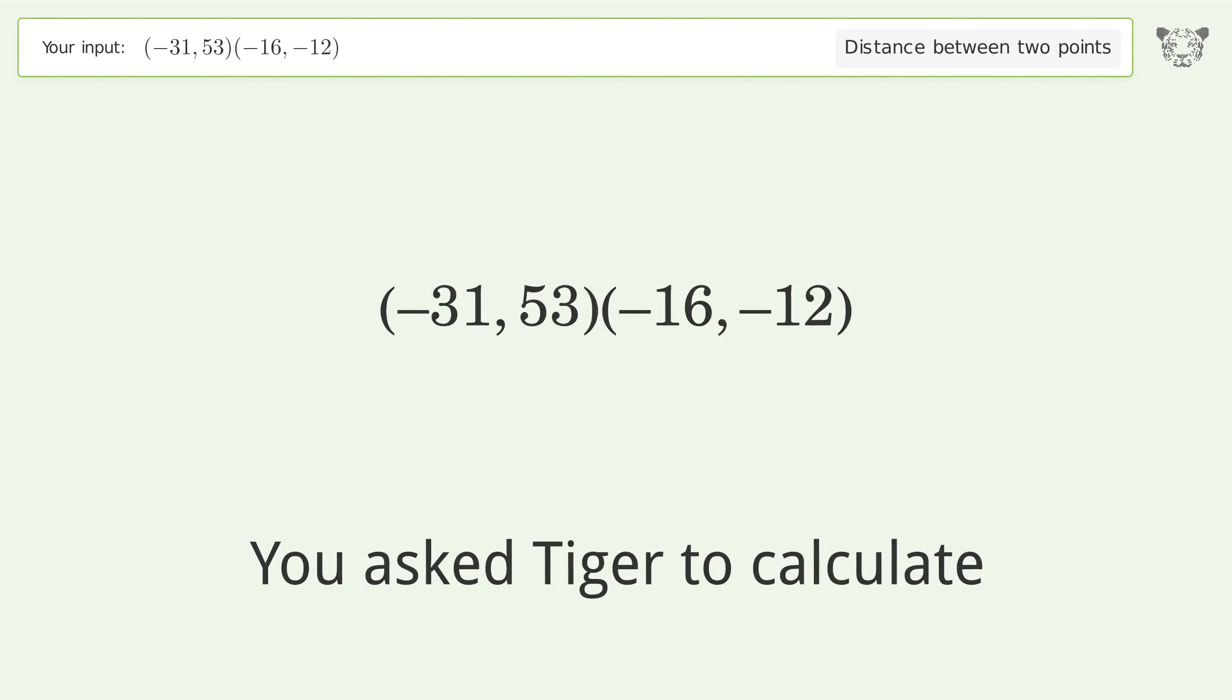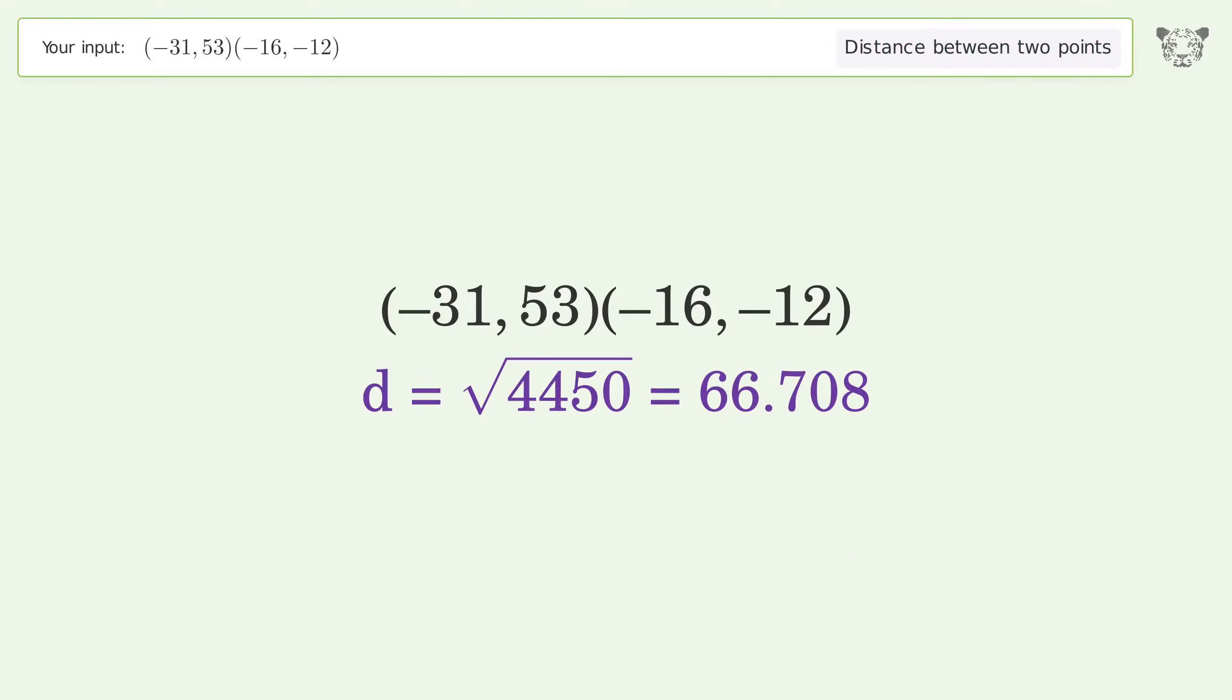You asked Tiger to calculate the distance between two points. The distance between the two points is the square root of 4450, or 66.708.